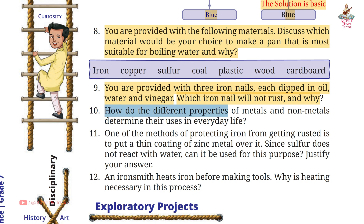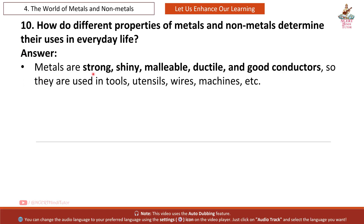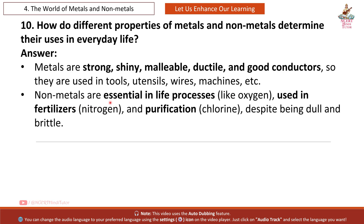Question 10: How do the different properties of metals and non-metals determine their uses in everyday life? Answer: Metals are strong, shiny, malleable, ductile, and good conductors, so they are used in tools, utensils, wires, and machines. Non-metals are essential in life processes — oxygen for respiration, nitrogen in fertilizers, and chlorine for purification — despite being dull and brittle.